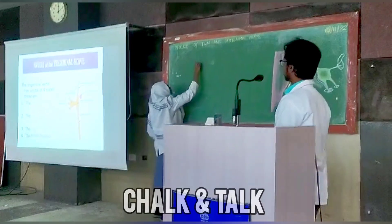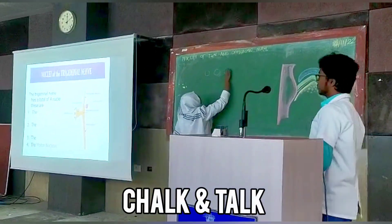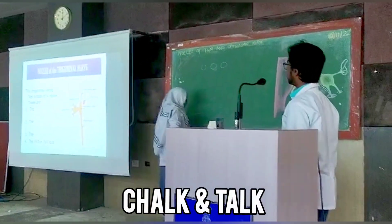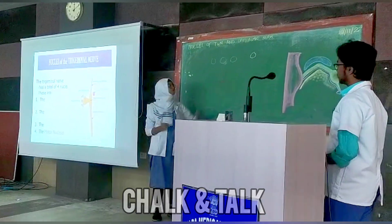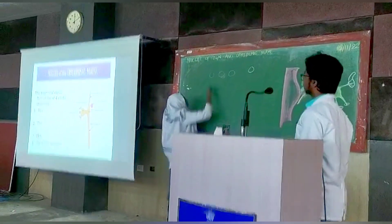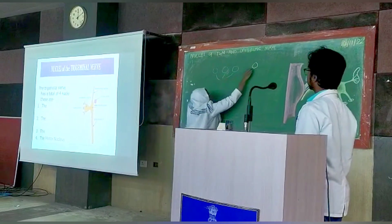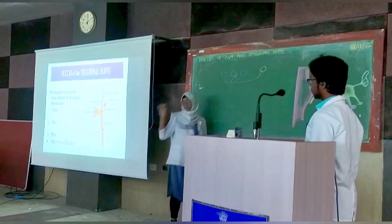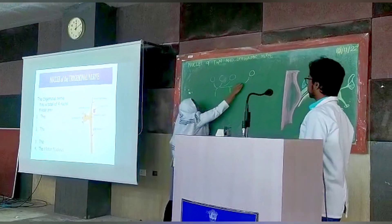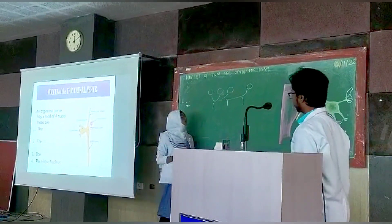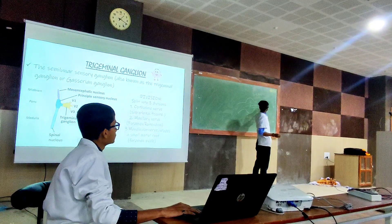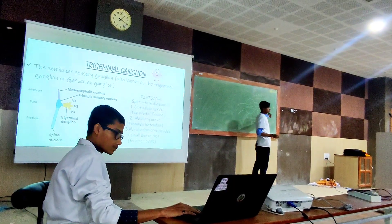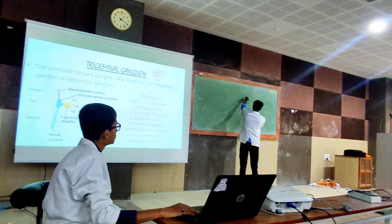The trigeminal nerve has four nuclei — three sensory and one motor. All four nuclei together merge at the trigeminal ganglion and give off three branches: V1, V2, and V3. These are the ophthalmic, maxillary, and mandibular divisions.